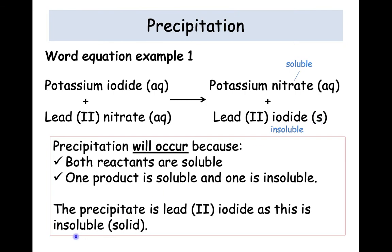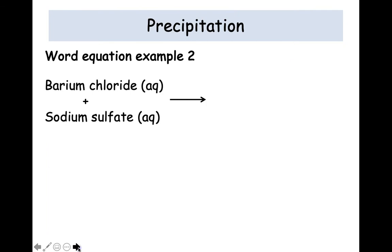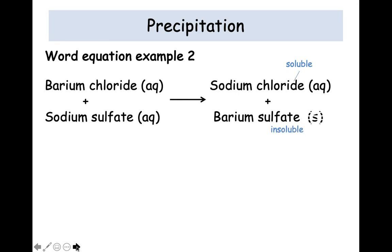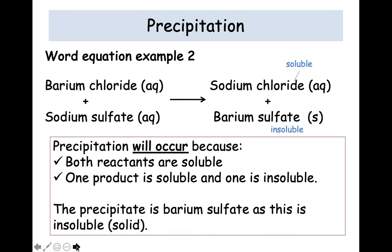So another example, same format. We've already decided that our reactants are soluble, so we have AQ. Swap the metals over, we get sodium chloride and barium sulfate. Sodium chloride is soluble, therefore AQ. Barium sulfate is insoluble, so gets an S. So again, it will occur because we have produced a solid. In this case, barium sulfate.